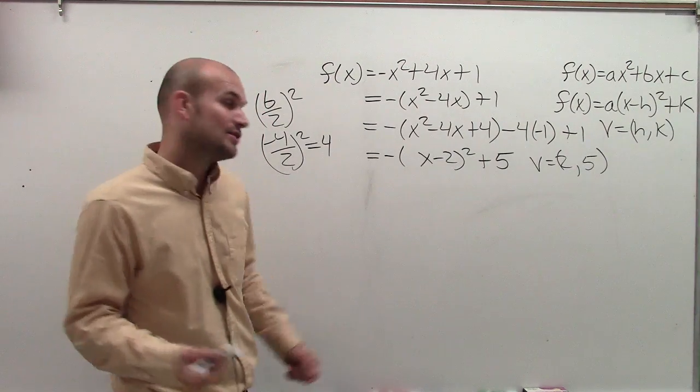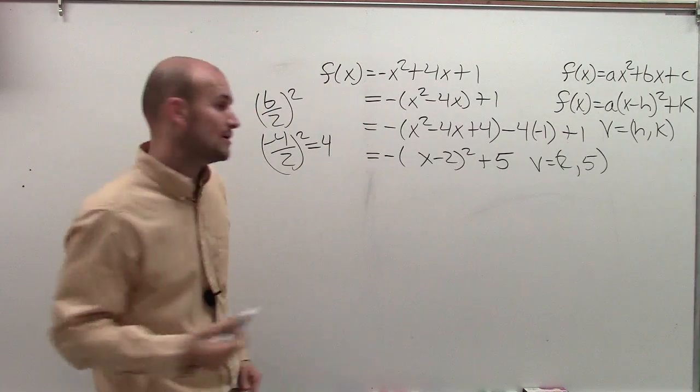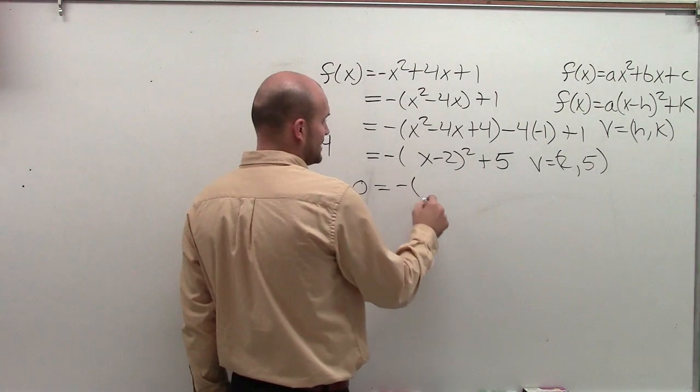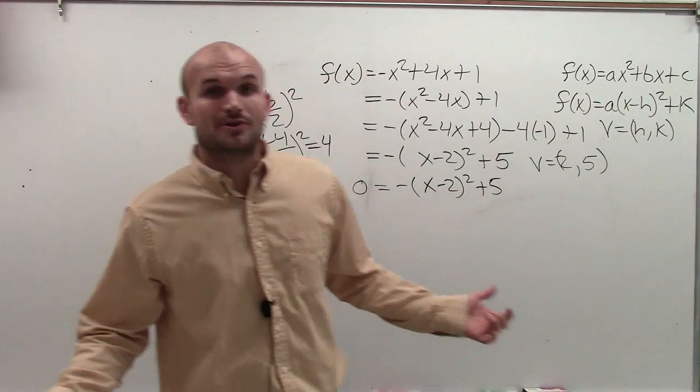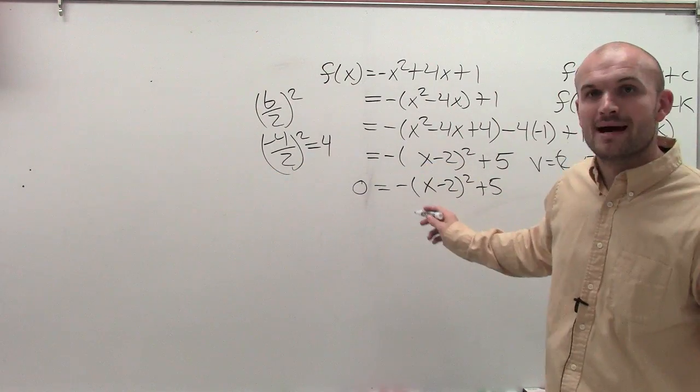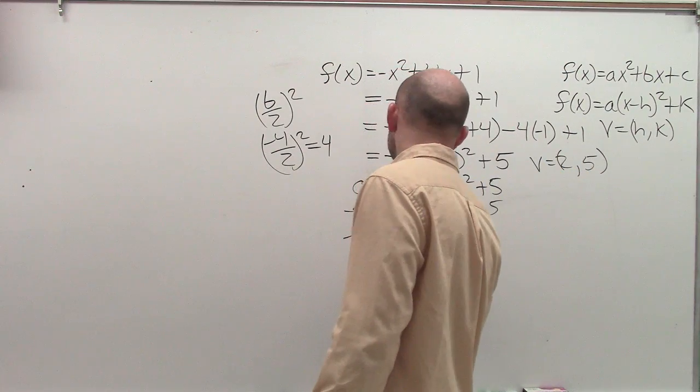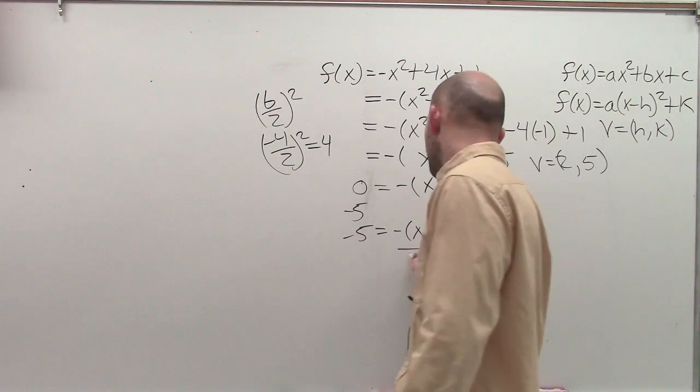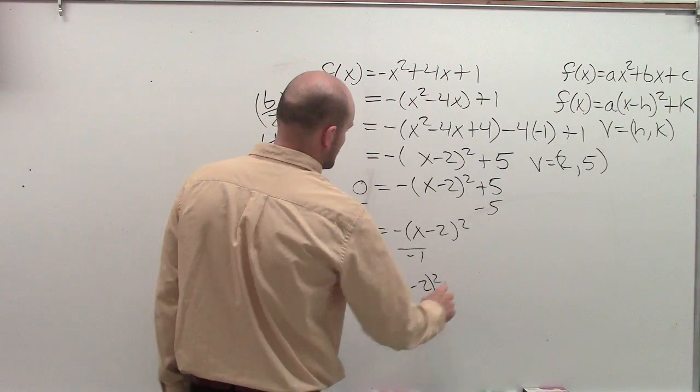The next thing I need to do is find the intercepts. Remember, the x-intercepts are when f of x equals 0. So to do that, I'm just going to simply put a 0 in for f of x. And so I have it equal negative times x minus 2 squared plus 5. So now what I can do is solve for my x. So the first thing we want to do is subtract 5 on both sides. Negative 5 equals negative x minus 2 squared. Divide out the negative 1.